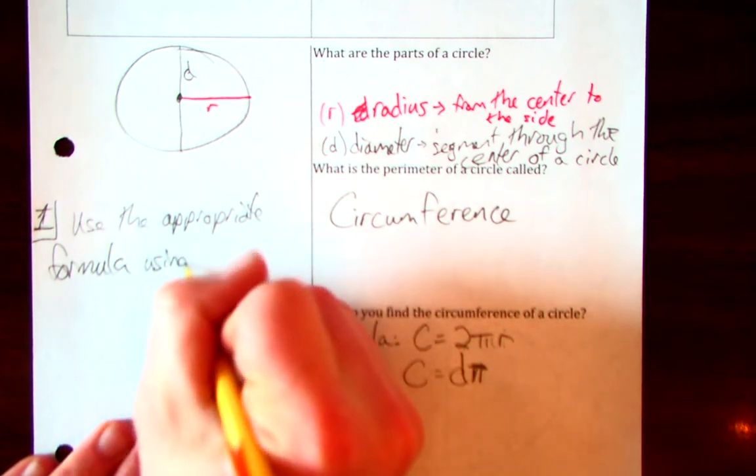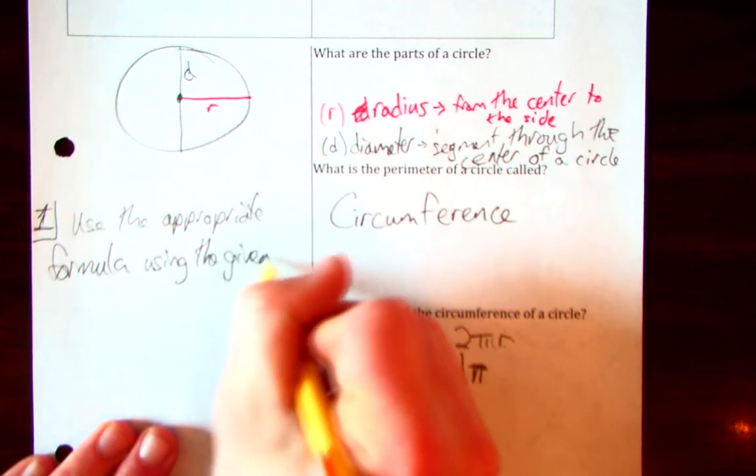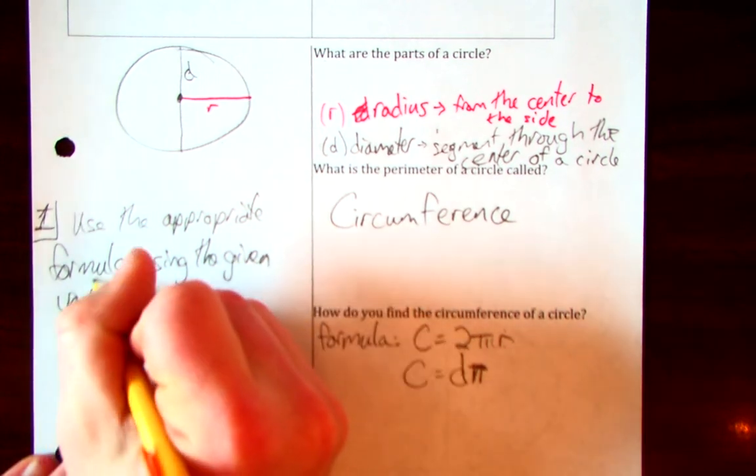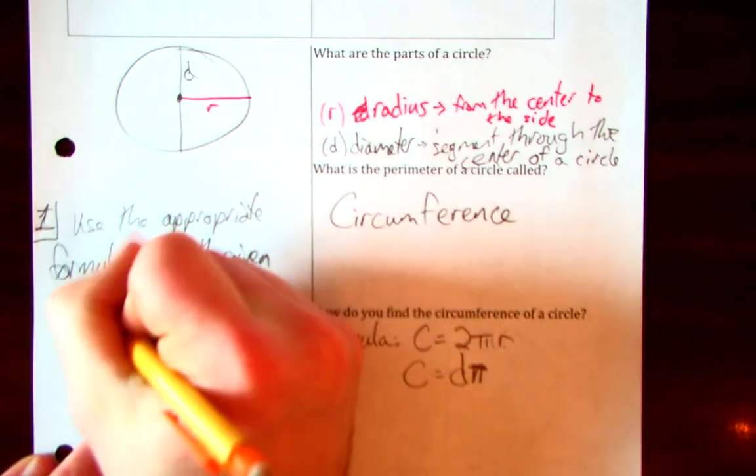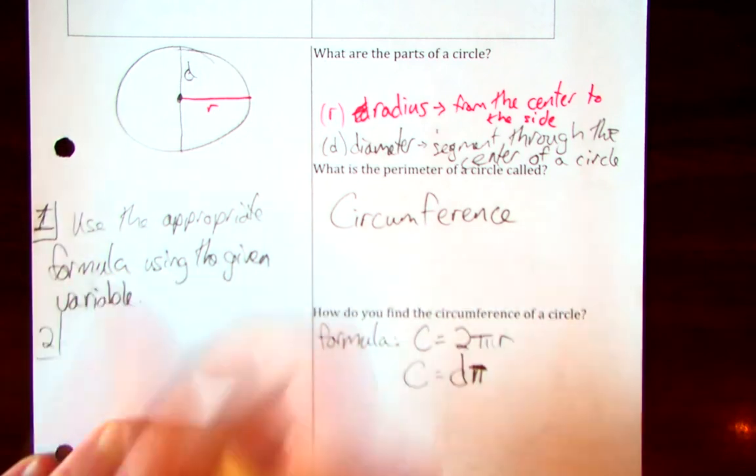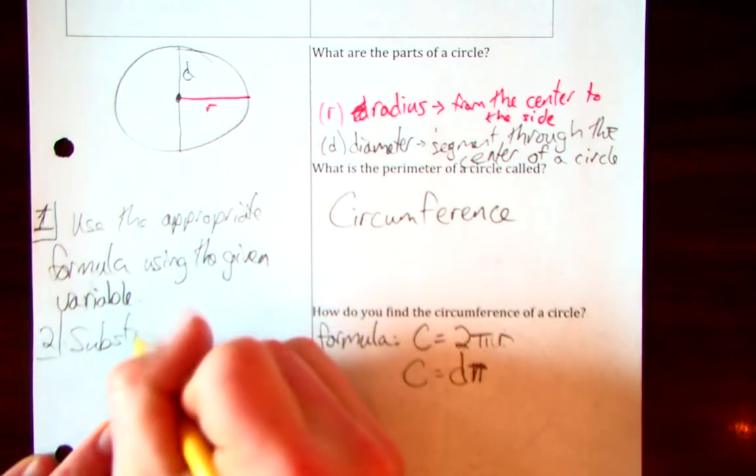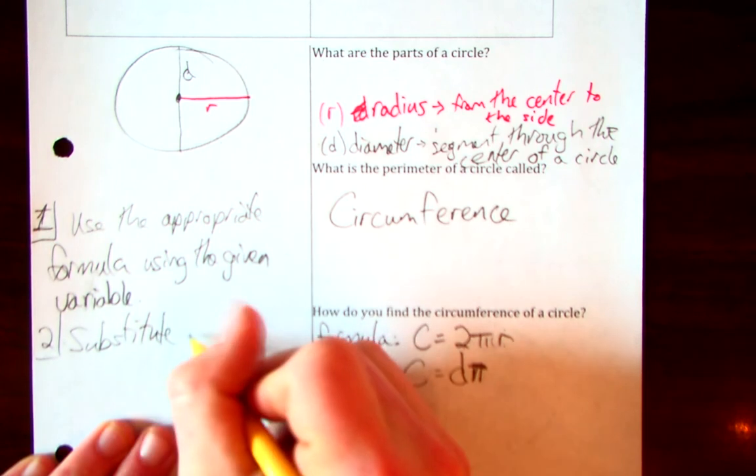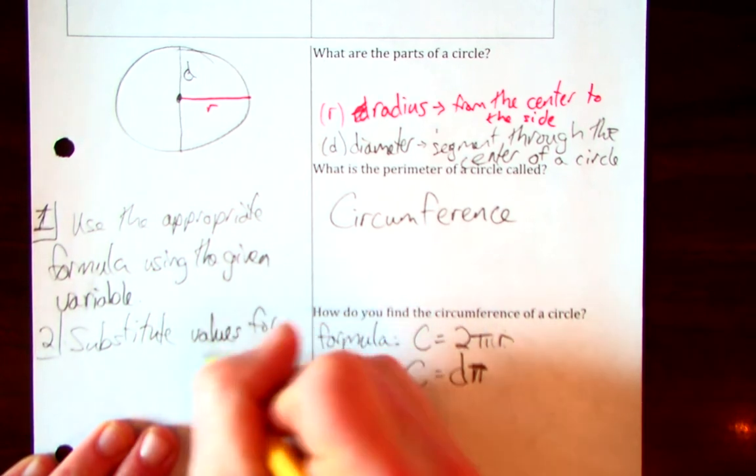Using the given values, or let's actually say the given variables because you can manipulate it several different ways for yourself. Step two: substitute those values for variables.